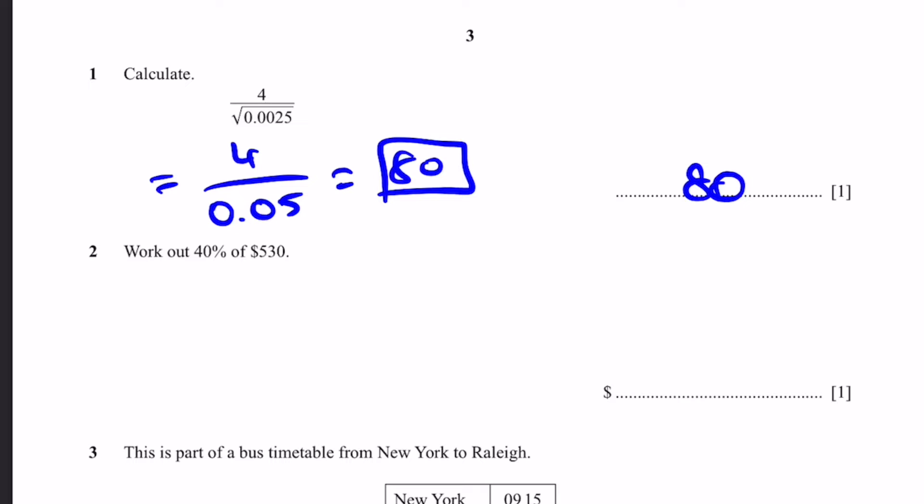Question 2: Work out 40% of $530. That's simply going to be equal to 40 by 100 times 530, and we can cancel a few zeros to get $212. That's the answer.